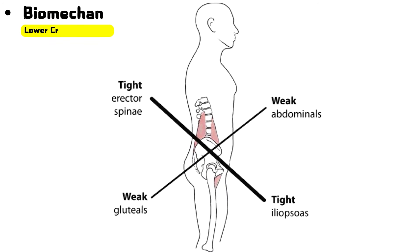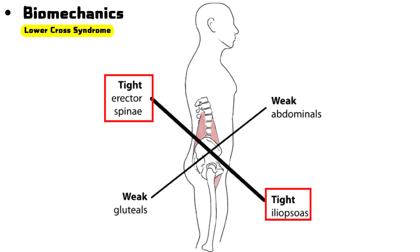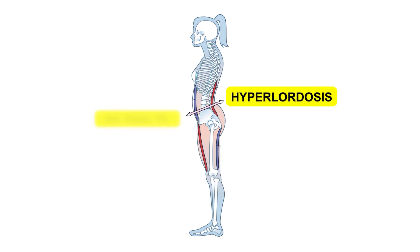Lower crossed syndrome occurs due to muscle imbalances in the lower body. The tight group of muscles are hip flexors, iliopsoas, rectus femoris, and lumbar erector spinae. While the weak inhibited muscles are gluteus maximus and medius, and deep core stabilizers. These imbalances create the characteristic anterior pelvic tilt, excessive lumbar curve, and weak core activation seen in lower crossed syndrome.